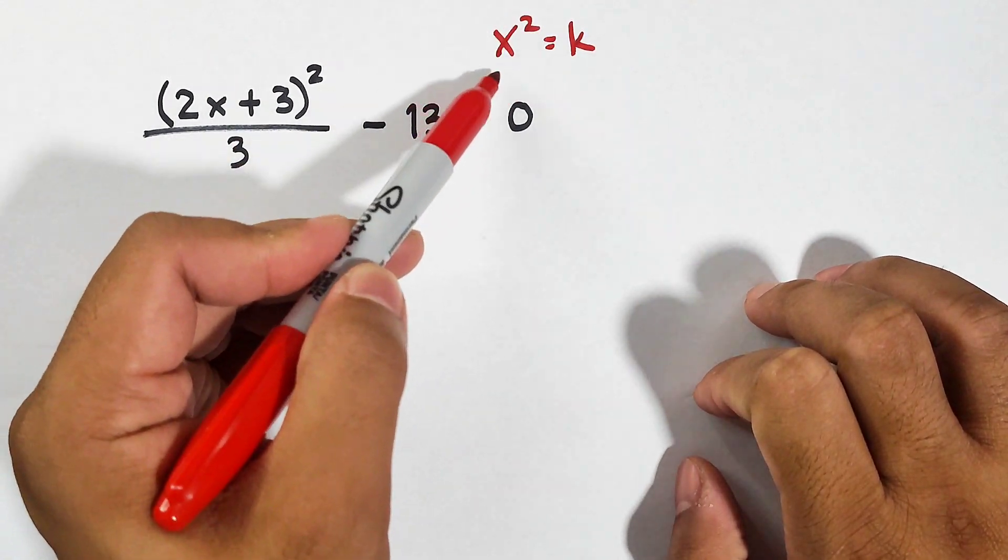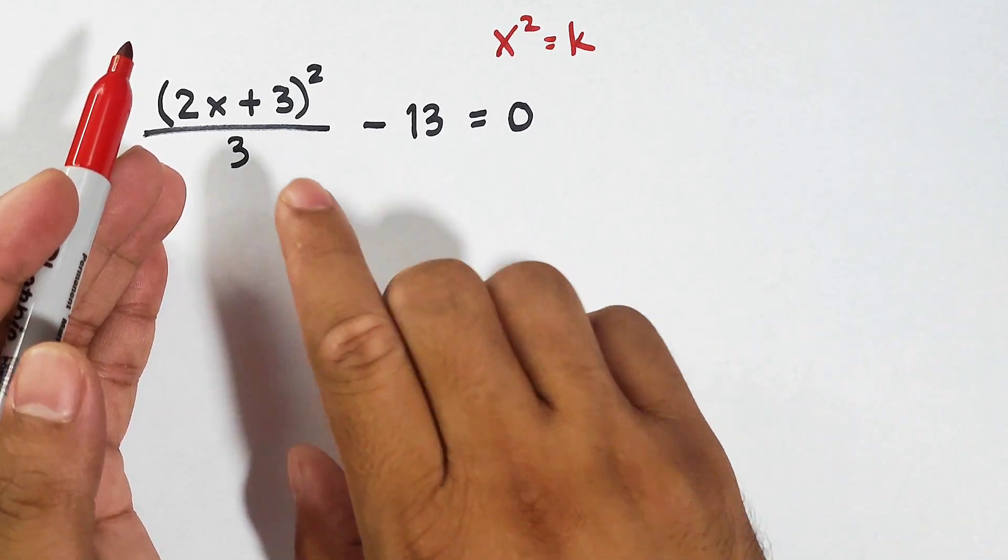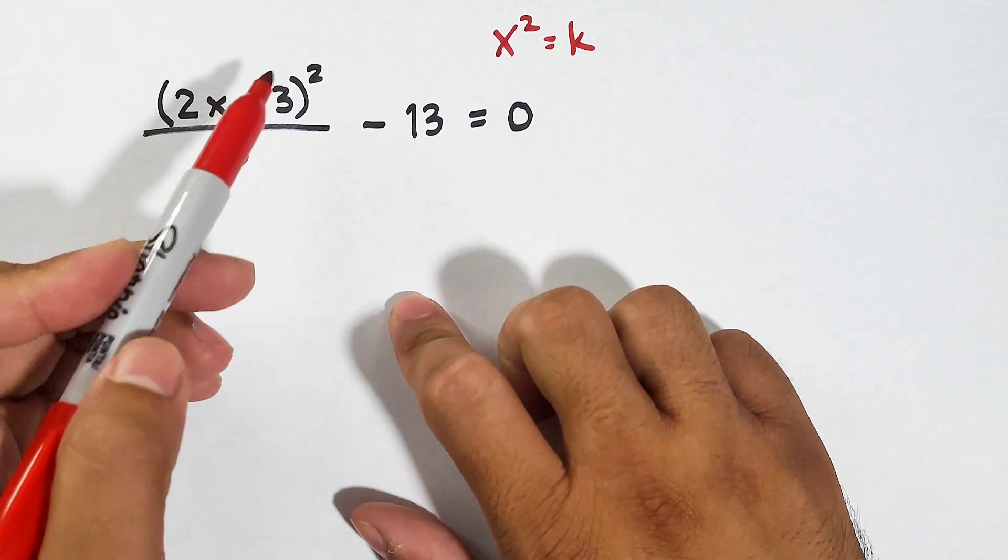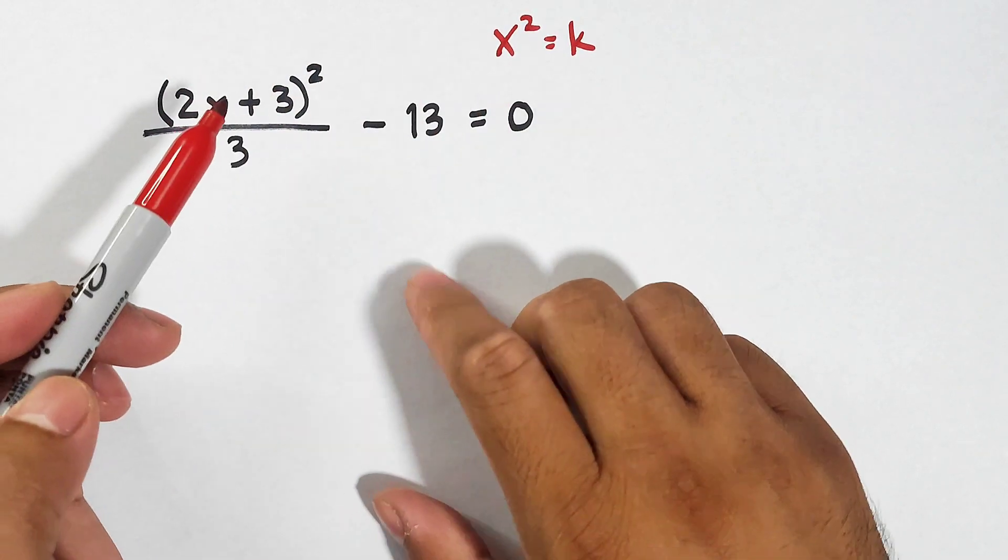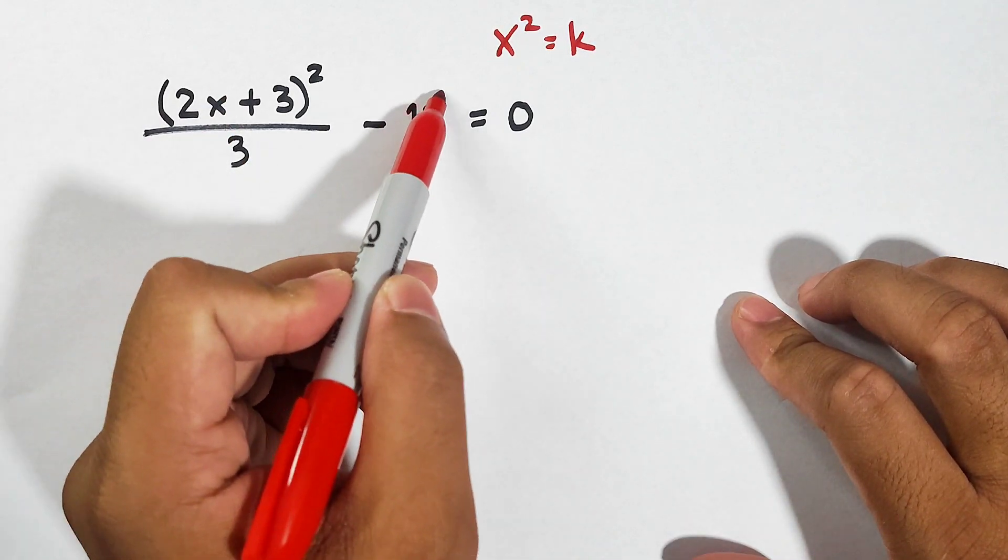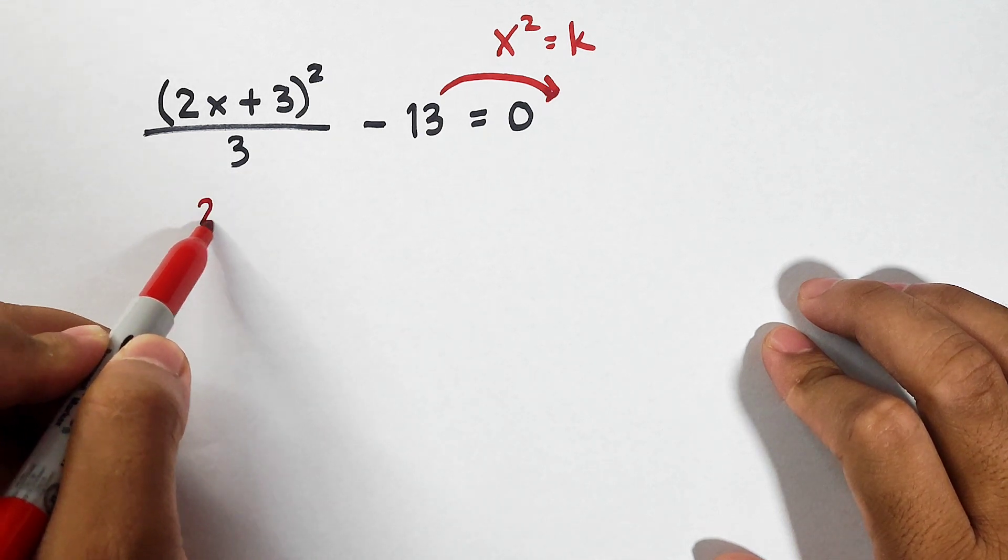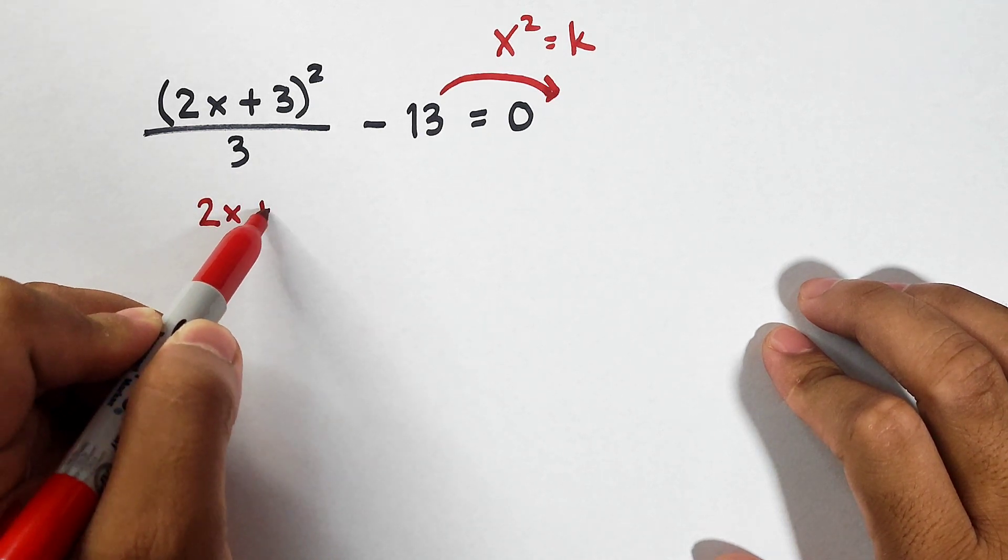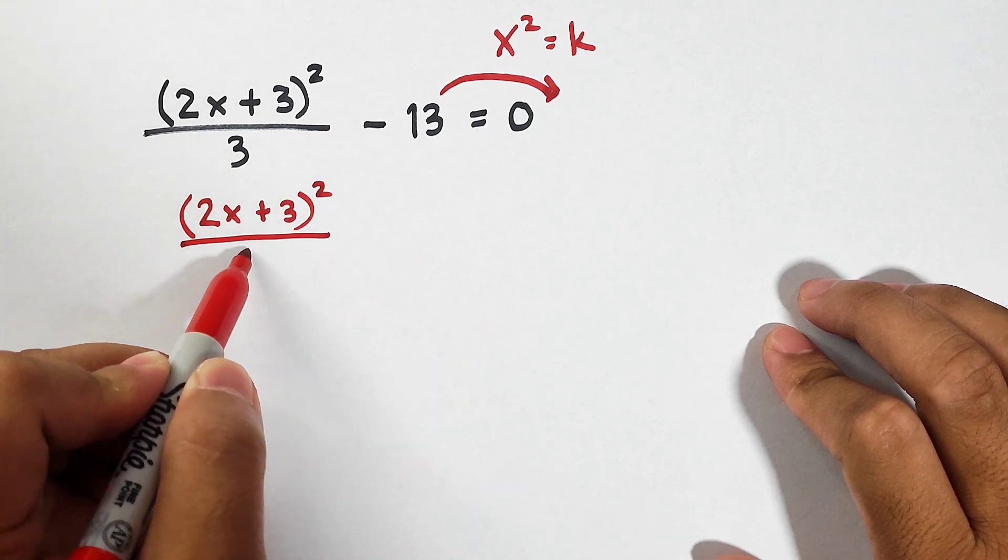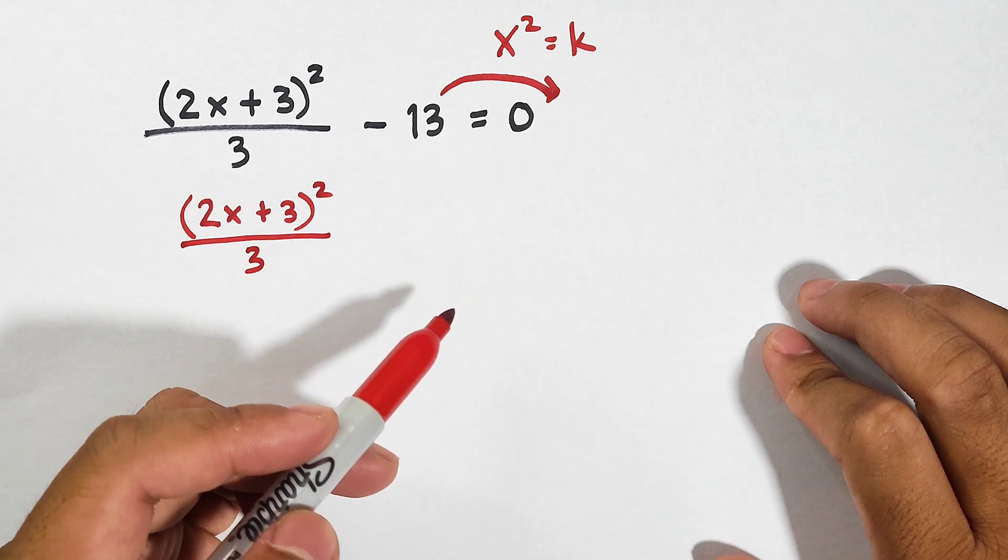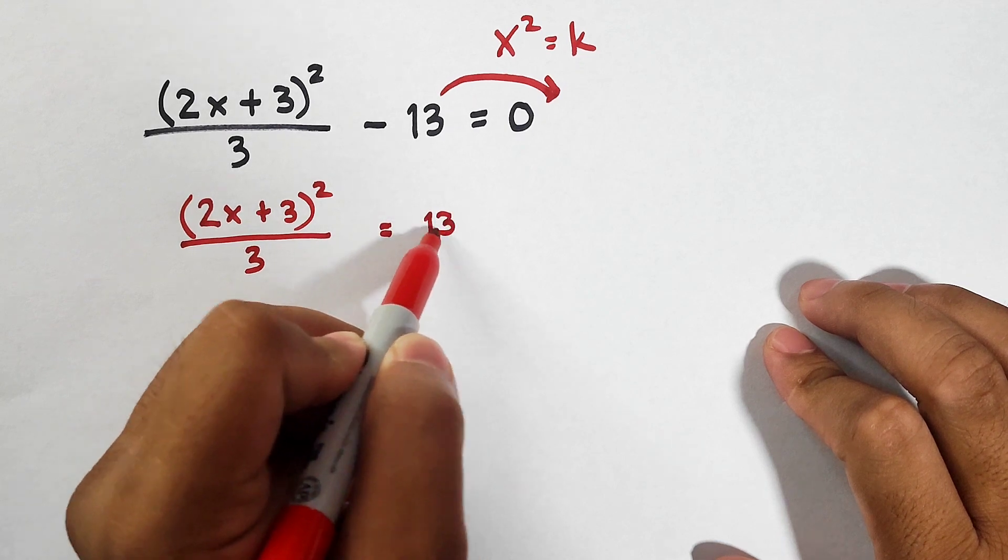Right now, we have many problems on the left side. We need to remove the negative 13 and the 3, because this part is equivalent to x squared. Let's start with this. We will transpose negative 13 to the other side of the equation. It will become 2x plus 3 raised to the second power over 3, transpose negative 13 to the other side, it will become positive 13.